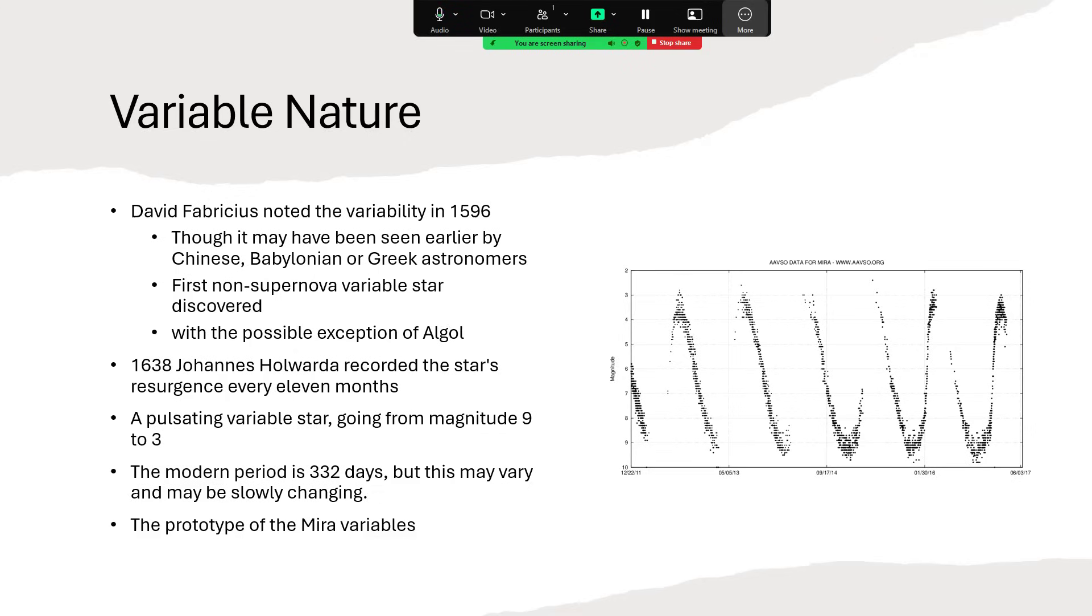So it was recorded in the 1600s by various astronomers, including Johannes Holwarda, that the star resurged in brightness in this 11-month pattern, going from invisible magnitude nine all the way up to a reasonably bright magnitude three. And the modern period for that agrees at about 332 days, but we think this varies a little bit and may indeed be slowly changing. You see the light curve on the right hand side there, and a whole class of what are now called Mira variables.